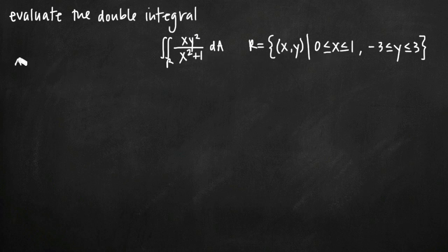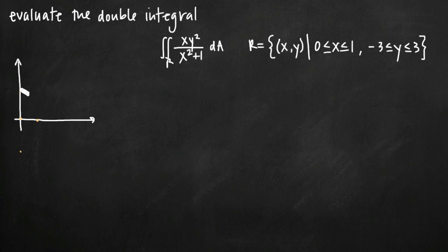If you draw a Cartesian coordinate plane and talk about x going from 0 to 1, and y going from negative 3 to positive 3, what we've been asked to do is find the volume sitting on top of this rectangle but below this function. That's the general concept, but evaluating the integral is fairly simple because we've already been given the intervals for x and y.